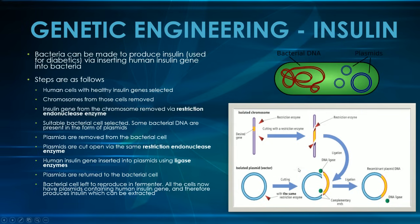The bacteria inside the fermenter will then start to produce human insulin, and the insulin is extracted and used for diabetics. The diagram here summarizes things well. The main thing to remember is that you use the same restriction endonuclease enzyme to extract the human insulin gene from the human chromosome and to cut the plasmid, so that you can insert it using the ligase enzyme.